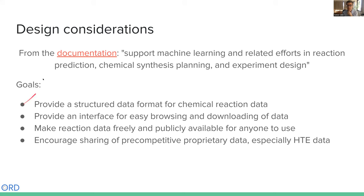The fourth goal is a bit less tangible, but something we're trying to do as well is encourage the sharing of reaction data that might not otherwise be shared. This could include pre-competitive data from for-profit companies where the reactions don't contain any IP and companies are willing to share that data. It also includes academic work where there may be sets of failed reactions that we don't normally publish, but we'd like to start capturing those negative reactions for downstream learning applications.